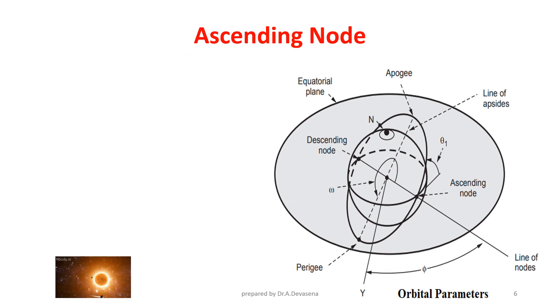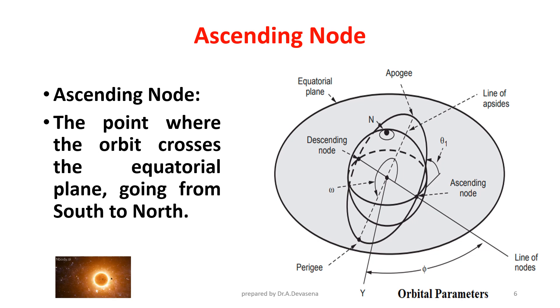Ascending Node. The point where the orbit crosses the equatorial plane going from south to north is called Ascending Node. The Ascending Node is represented here.